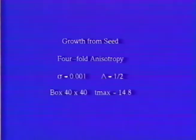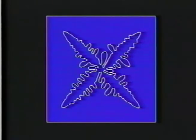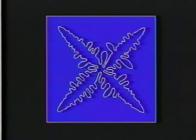When the magnitude of the surface energy is reduced by a factor of five, side branches are generated. Notice the vestigial arms left over from the early growth period, which are overwhelmed by their neighbors growing in the preferred directions.